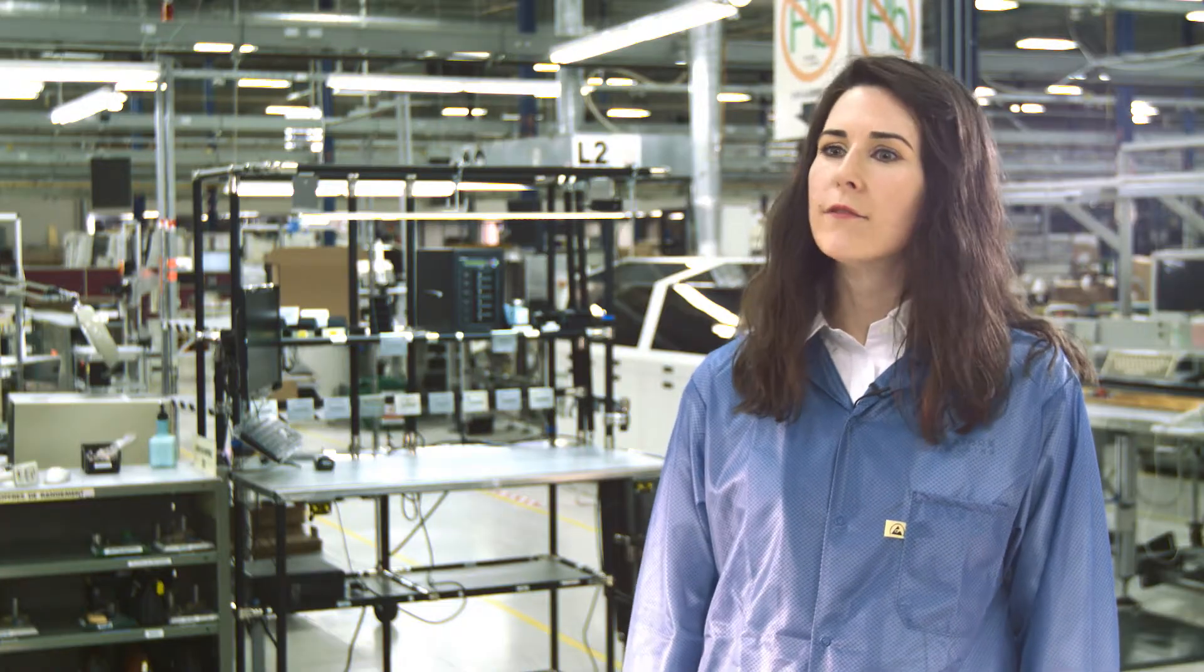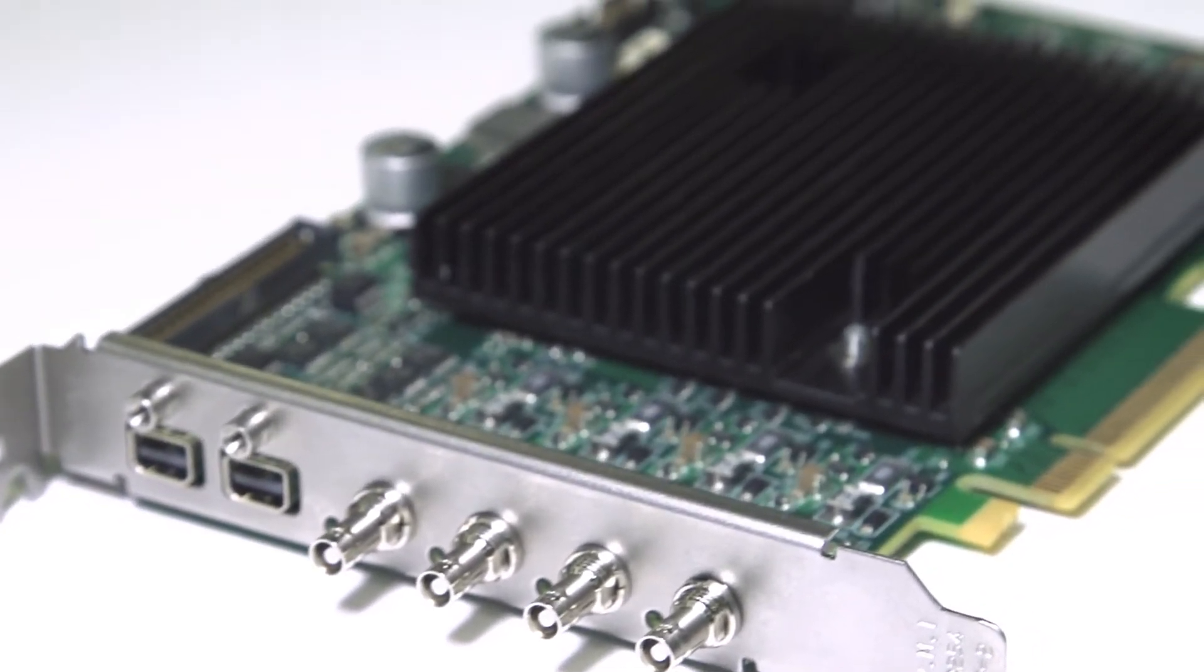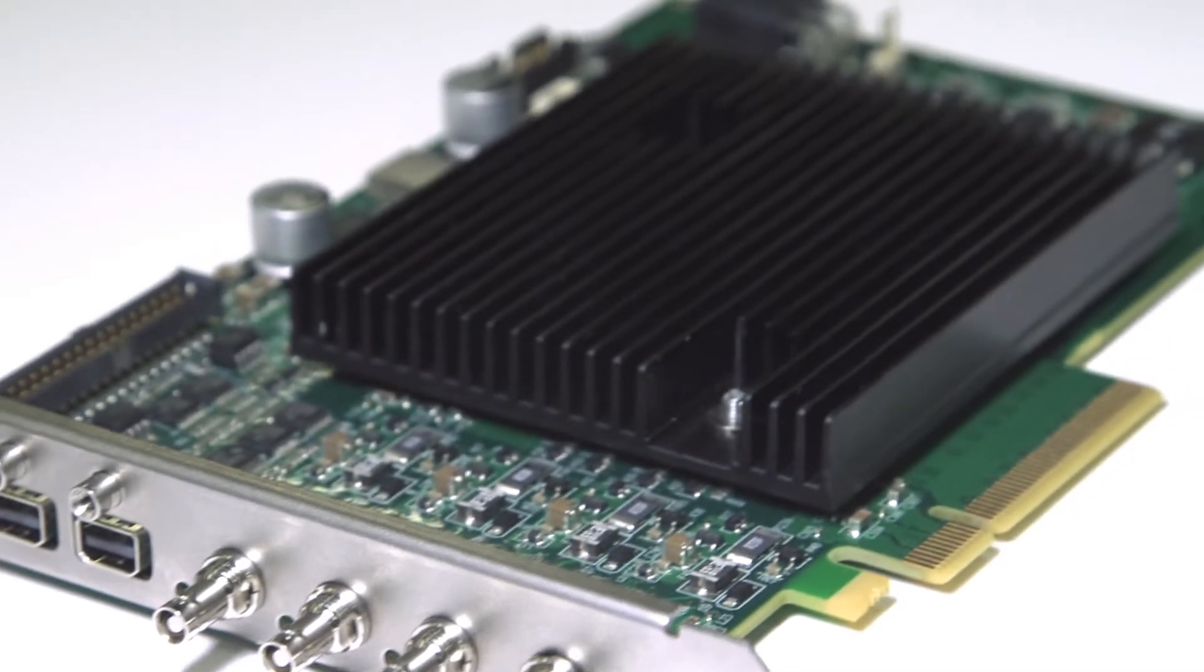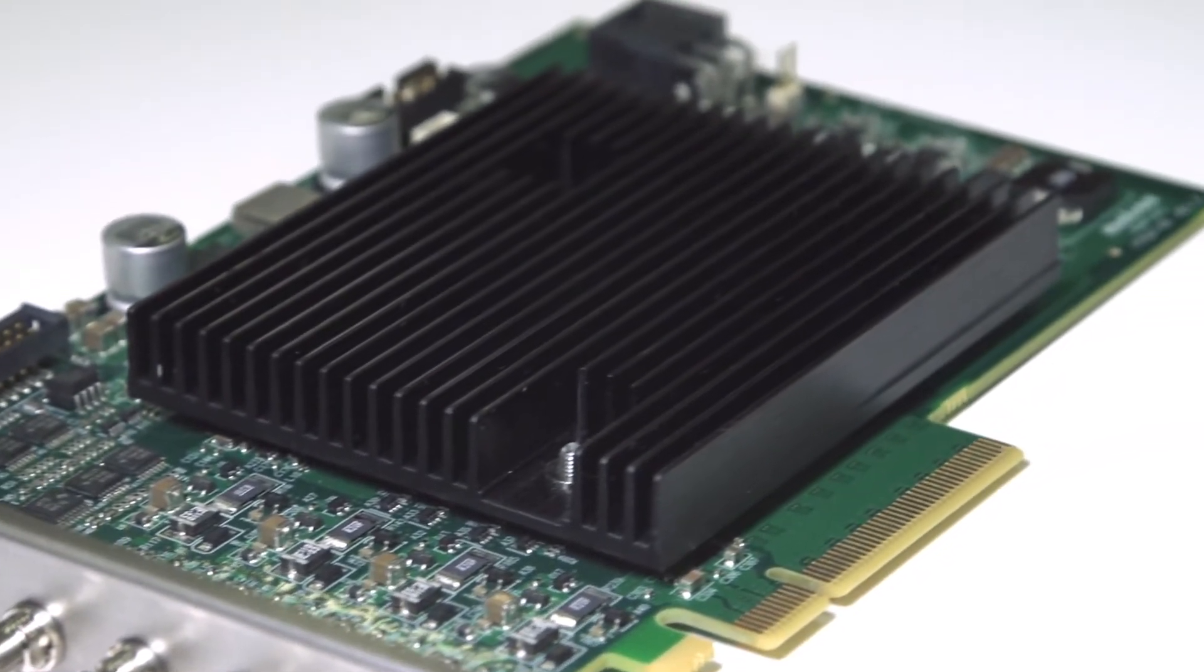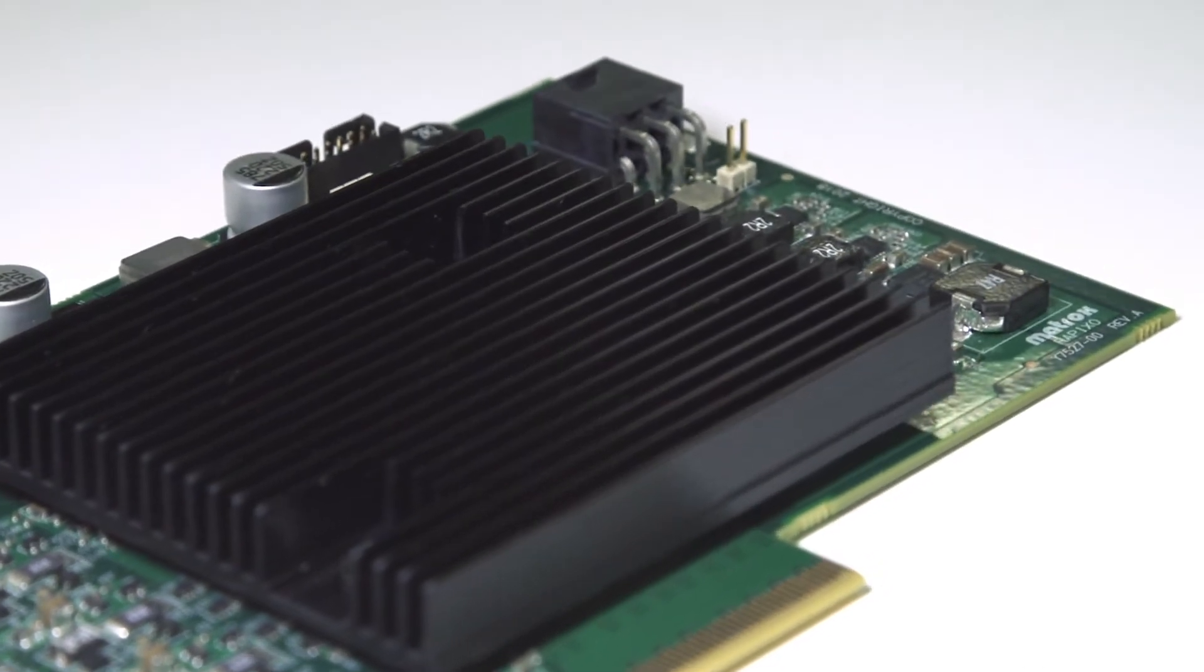Okay, so speaking of version 2 of CoaxExpress, what's so significant about it? Basically, it means more speed, 12.5 gigabits per second on a single coax cable. The effective bandwidth will be 1200 megabytes per second on one connection and it could be four times that if you use connection aggregation like it's supported in our Rapixo CXP board.